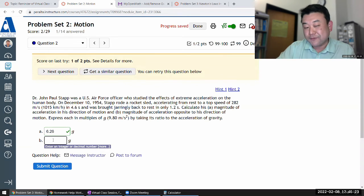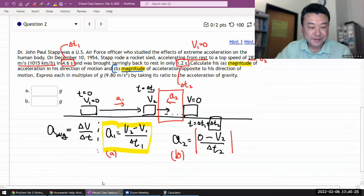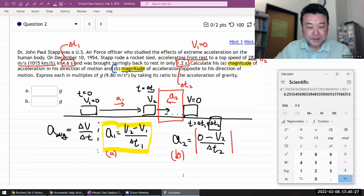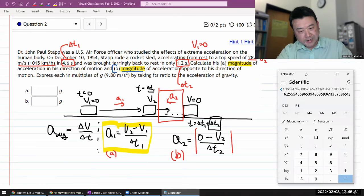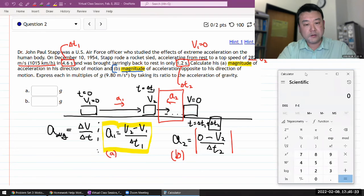Okay, so for acceleration two, so it's technically speaking zero minus 282, that's the numerator, divided by the time t2, 1.2 seconds. And so this is meter per second squared.